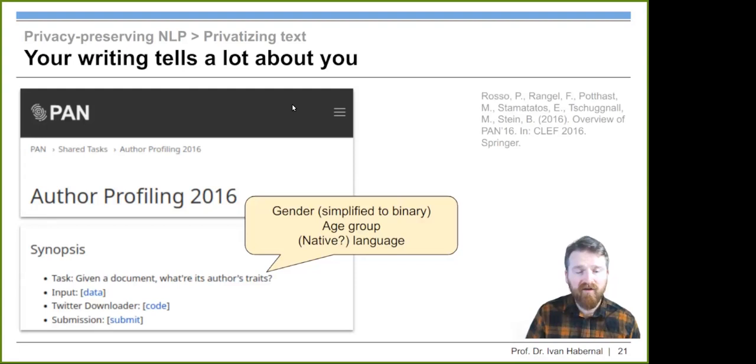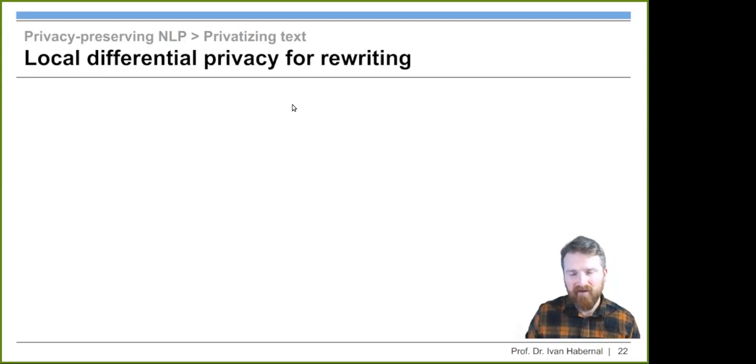The goal here is to be really, really transparent about everything doing in this privacy setup, because not all papers, unfortunately, are doing that. We'll see some examples later. We're trying to be super transparent. This was machine translation, but it was just a model should be trained such that it's preserving privacy. If you release the model, it won't reveal anything from the training data. But how about privatizing texts?